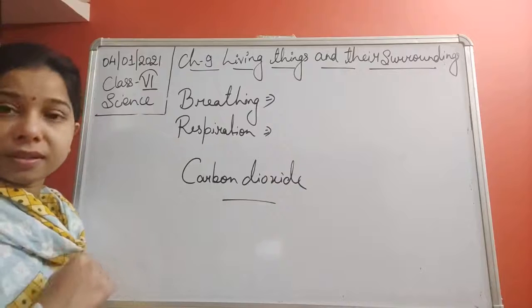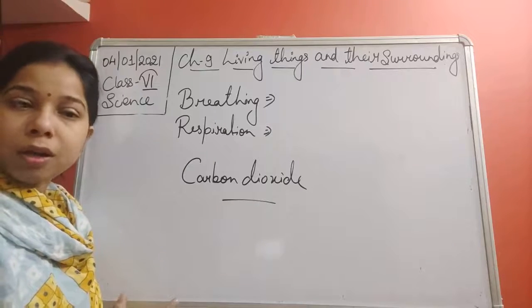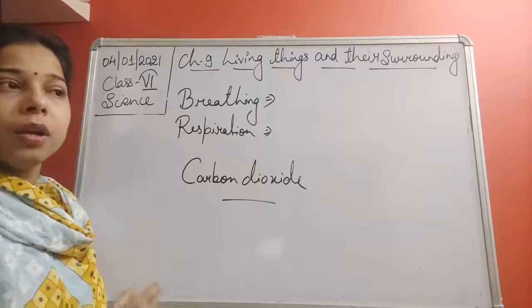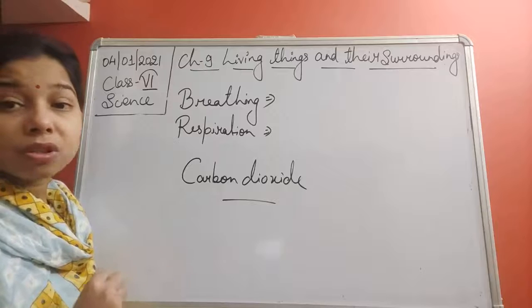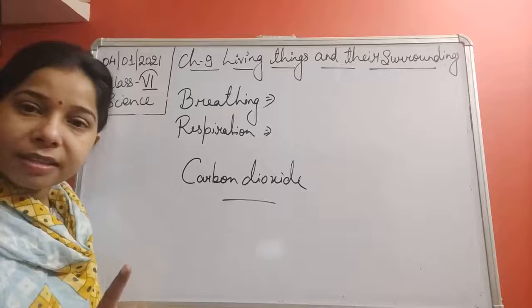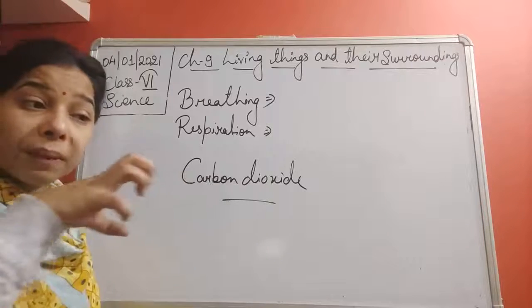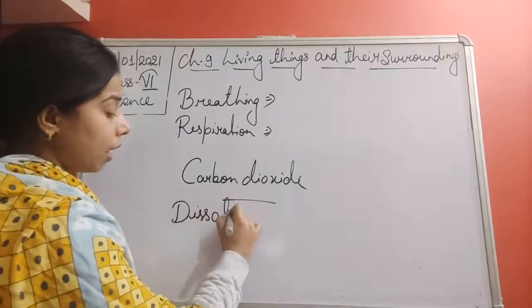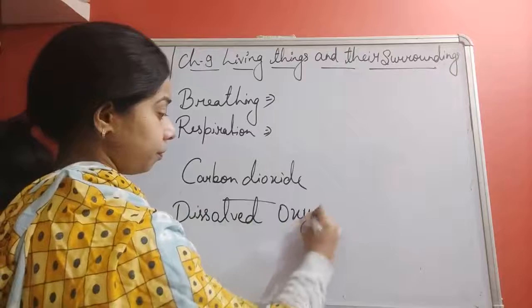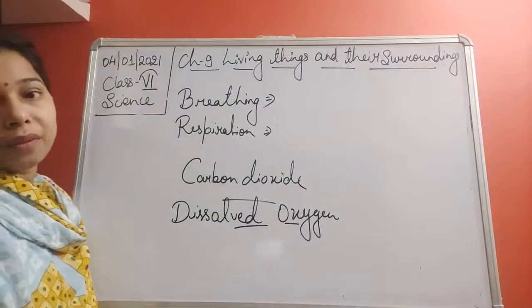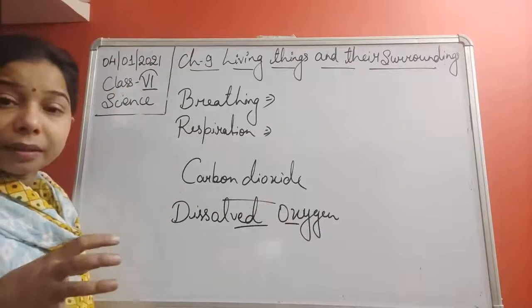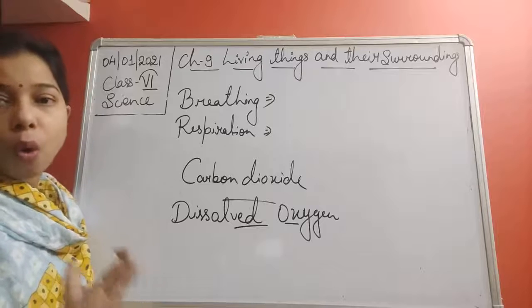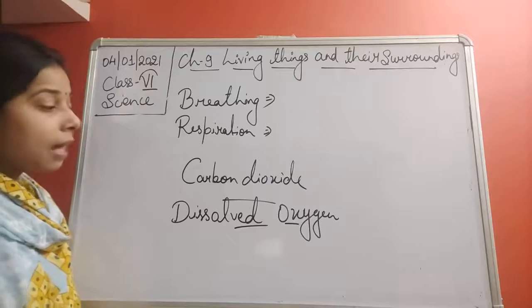Now if we talk about fishes, they live in water, so they must have an organ that helps in obtaining oxygen. The question is how fishes obtain oxygen. This oxygen is present in the water itself - it is known as dissolved oxygen. Fishes obtain dissolved oxygen from water using a special organ.